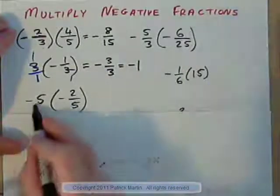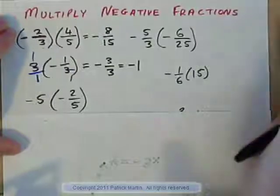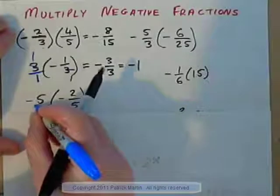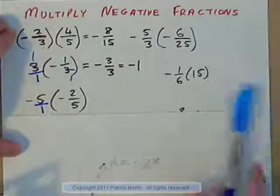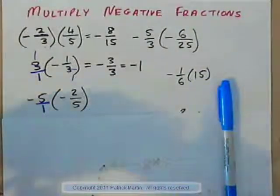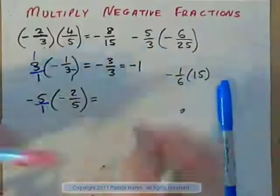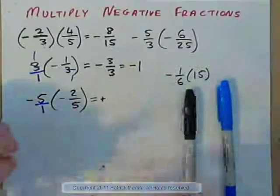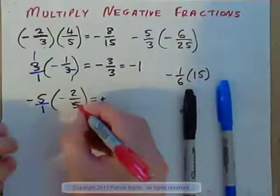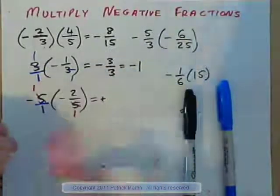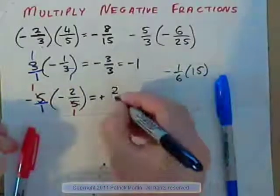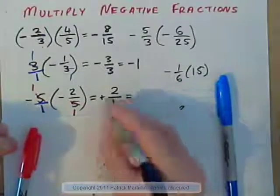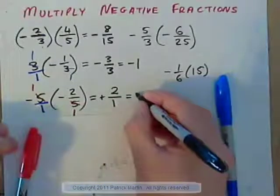Let's have a look at this one: negative 5 times negative 2/5. Again, we've got a whole number — actually an integer — times a fraction. Let's turn that integer into a fraction: negative 5/1 times negative 2/5. Always do the sign first: negative times negative is positive. Now 5 and 5 cross-cancel to give 1. 1 times 2 is 2, over 1 times 1 is 1. Positive 2/1 is positive 2.